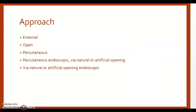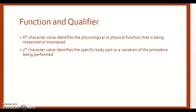Our fifth character is the approach. All the approaches we've seen before in past PCS coding: external, open, percutaneous, percutaneous endoscopic, via a natural or artificial opening, or via a natural or artificial opening endoscopic. Our sixth and seventh characters are function and qualifier. The sixth character identifies the physiological or physical function being measured or monitored, and the seventh character qualifier identifies the specific body part or variation of the procedure being performed.